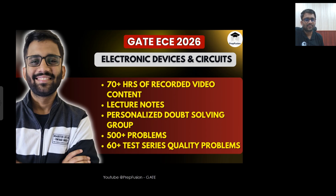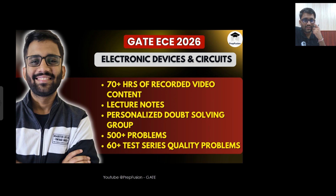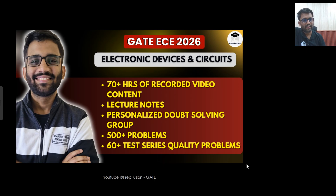Now let's move to the EDC course — Electronic Devices and Circuits. The content will be roughly 70 hours. In 70 hours, the quality of information you'll get will be next to none, even compared to 100 or 150-hour courses, because EDC has a lot of theory — I won't waste time writing theory during the lecture; it will already be written. The whole time will be given to explanation. You'll get lecture notes, printable slides, and be added to a WhatsApp group for personalized doubt-solving.